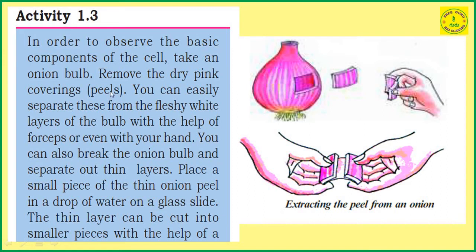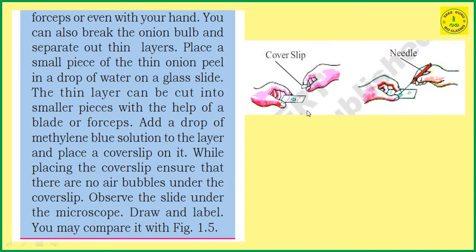Remove the dry pink coverings. We can easily separate the fleshy white layers of the bulb with the help of forceps or by hand. Then, we need a small piece of the onion peel on one microscopic slide.